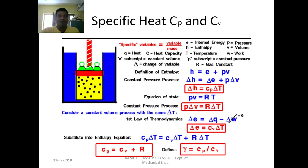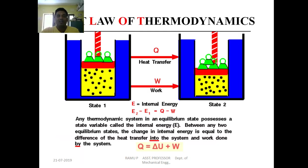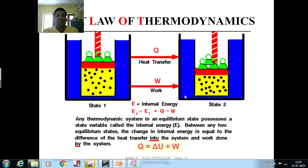The first law of thermodynamics states that the sum of heat energy equals the sum of work. The heat given can be converted into an equivalent amount of work. For any thermodynamic system in an equilibrium process, the state variable is called internal energy. Between any two equilibrium states, the change in internal energy equals the difference between heat transferred into the system and work done by the system. In a cyclic process, the net heat transfer equals the net work transfer.